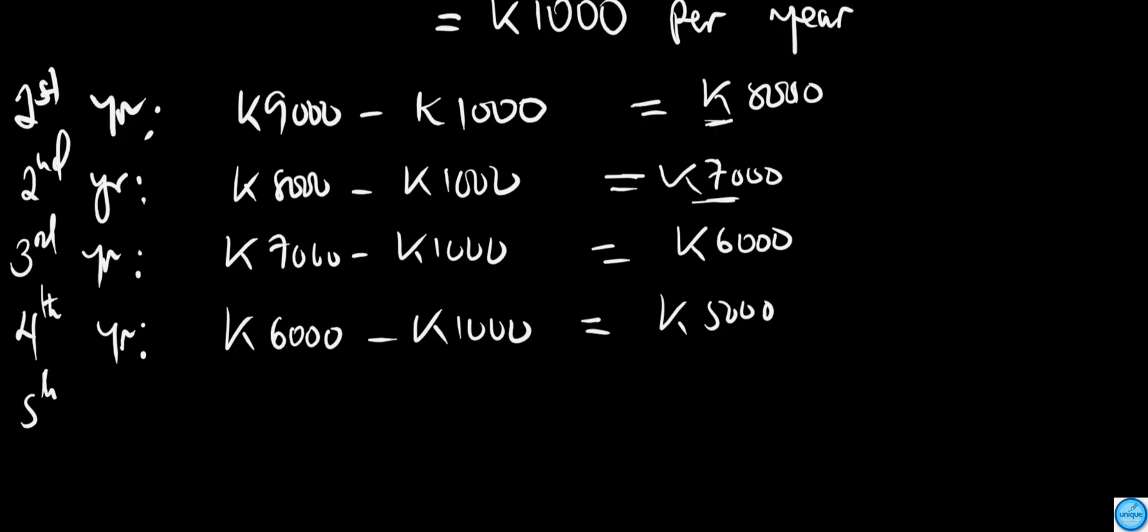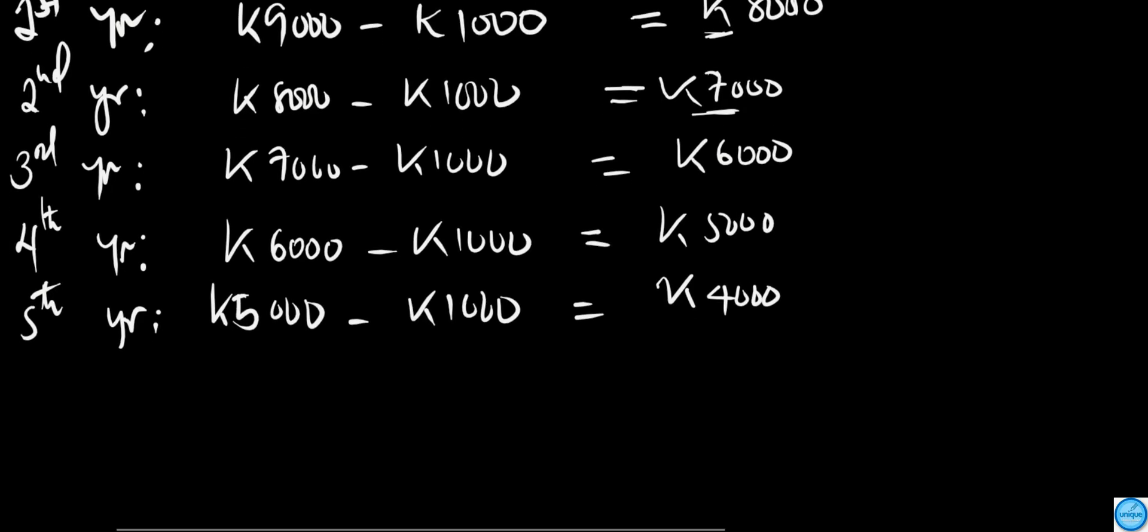In the 3rd year, it's K7,000 minus K1,000, which equals K6,000. And so on and so forth. In the 4th year, it's K6,000 minus K1,000, which equals K5,000.